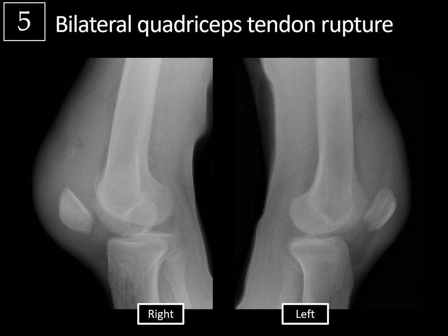Quadriceps tendon rupture is actually more common than patellar tendon rupture, and is more commonly seen with predisposing underlying illness — connective tissue disorders like lupus, gout, or rheumatoid arthritis, corticosteroid use, and renal impairment, particularly in patients on long-term dialysis. It's thought to be due to a combination of malnutrition, accumulation of uremic toxins, and secondary hyperparathyroidism, which cause dystrophic calcification and subperiosteal bone resorption. This weakens the tendon and osteotendinous junction, so even minor trauma can cause spontaneous rupture.